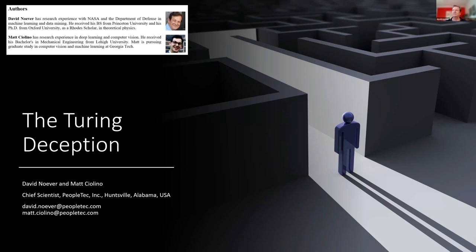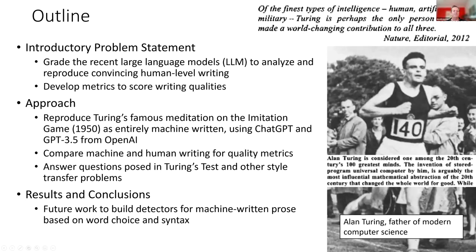The title is really a take on the original Turing imitation game, sometimes called the Turing test. We wanted to evaluate that in terms of changes that really happened within large language models within the last two months. We'll be focusing on OpenAI's ChatGPT and trying to reevaluate the Turing test as a modern benchmark. The outline covers an introductory problem statement, our approach, results, conclusions, and where we think this work might go.